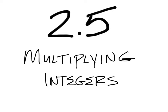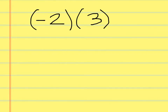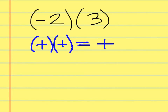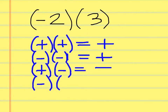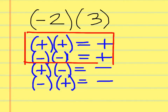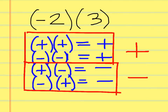Multiplying integers. The rules for multiplying integers, especially for the signs, are the following: positive times positive, the answer is positive; negative times negative, the answer is positive; positive times negative, the answer is negative; negative times positive, the answer is negative. Notice — if the signs are the same, the answer is positive; if the signs are different, the answer is negative.